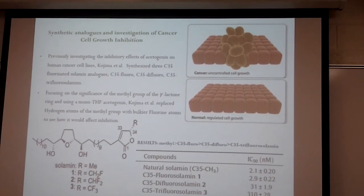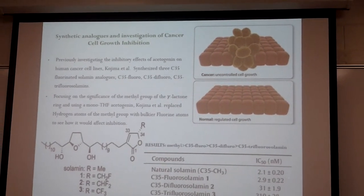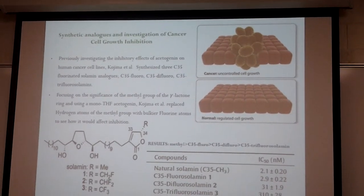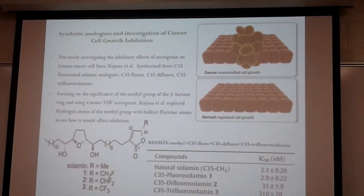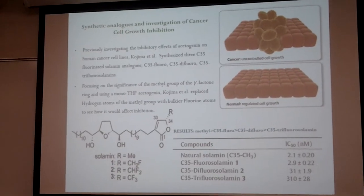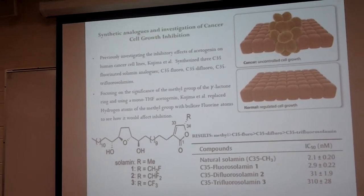Results showed as the methyl group was present, there was greater cellular inhibition on cancer cell growth. But when a fluorine replaced a hydrogen atom, there was less cellular cancer cell inhibition. And as you can see, cell growth goes up.